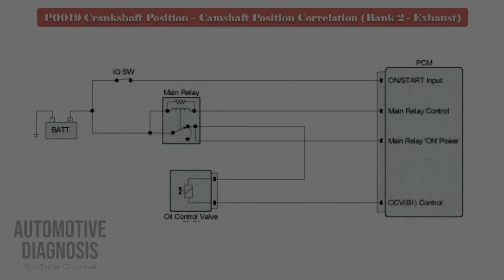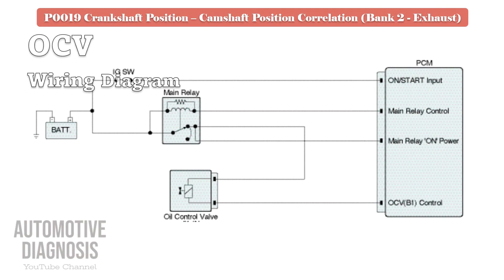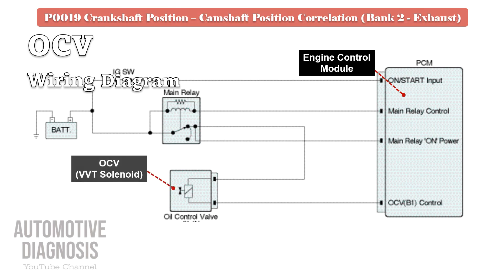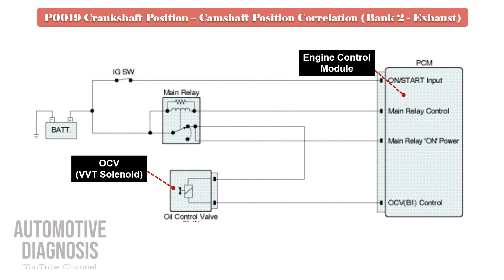To start testing the OCV, it is very important to review the OCV wiring diagram. As soon as you turn on the ignition switch, power supply will be provided to the OCV via the engine main relay, so you must have battery voltage on that pin when ignition is on or when the engine is running. OCV is controlled by the PCM using the other wire, so the control line must be checked too.